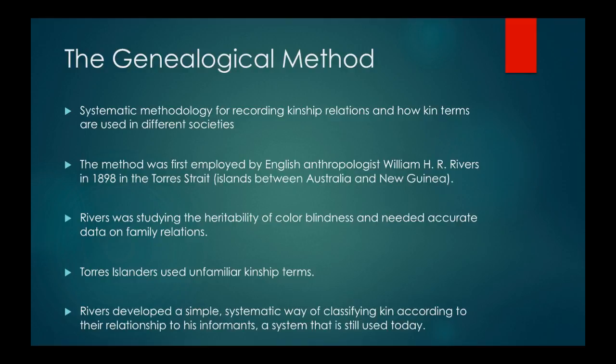English anthropologist Rivers first studied color blindness, and he started this method basically because he needed accurate data on relations between families since he was tracking heredity. The people he was studying had very unfamiliar kinship terms to him, so he started classifying kin according to their relationships to his informants. We still use that system today. The genealogical method is essentially recording kinship relations and how kin terms are used in a society.